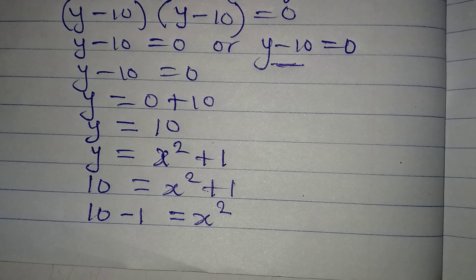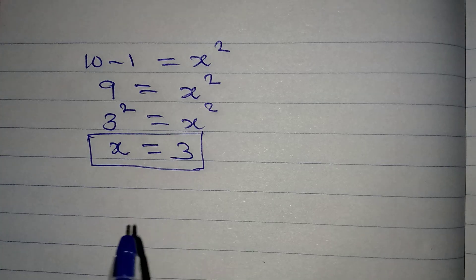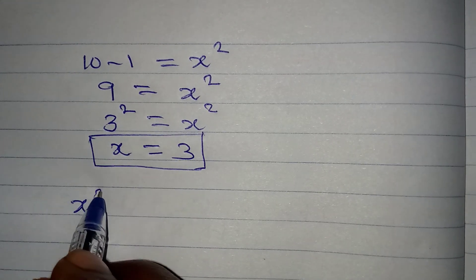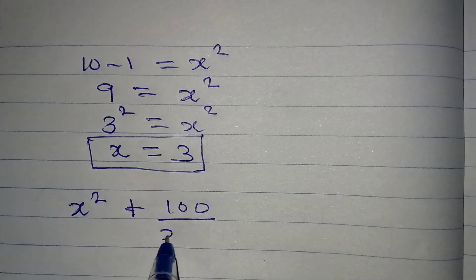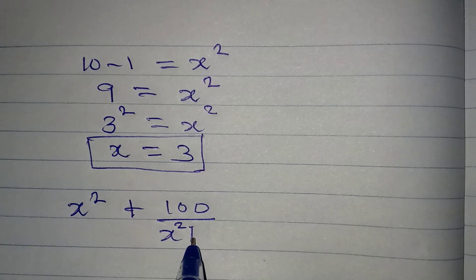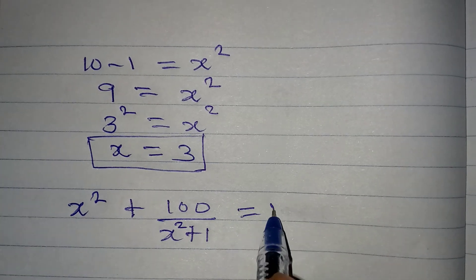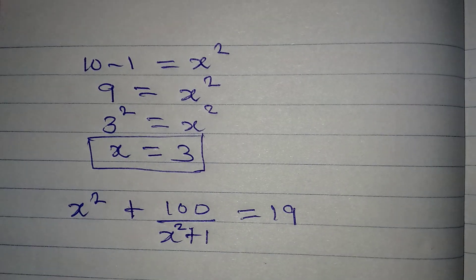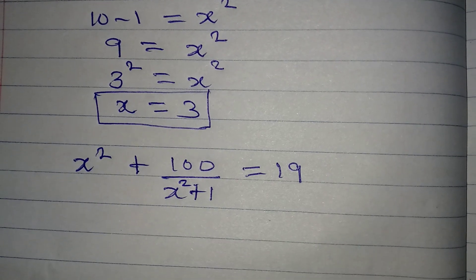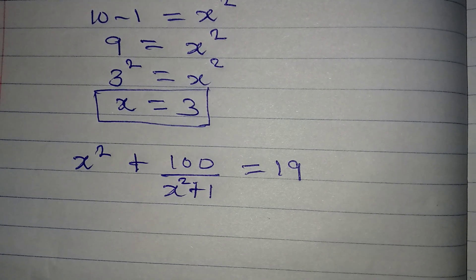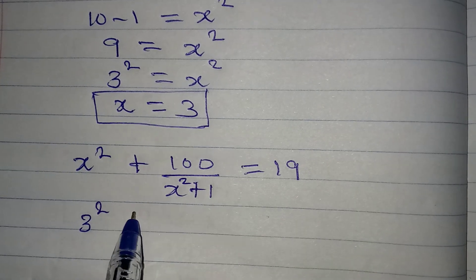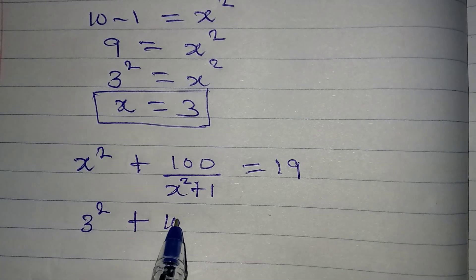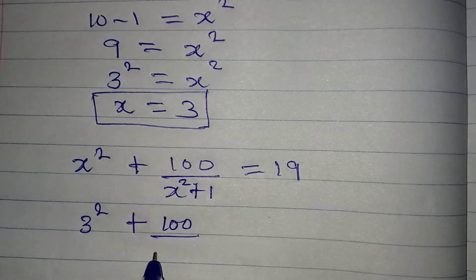Now let's go back and check to know if we are right or wrong. The original equation is x squared plus 100 over x squared plus 1 equal to 19. Now I want us to deal with the left-hand side and see. X squared, so x squared here now becomes 3 squared plus here we have 100 over 3 squared plus 1.